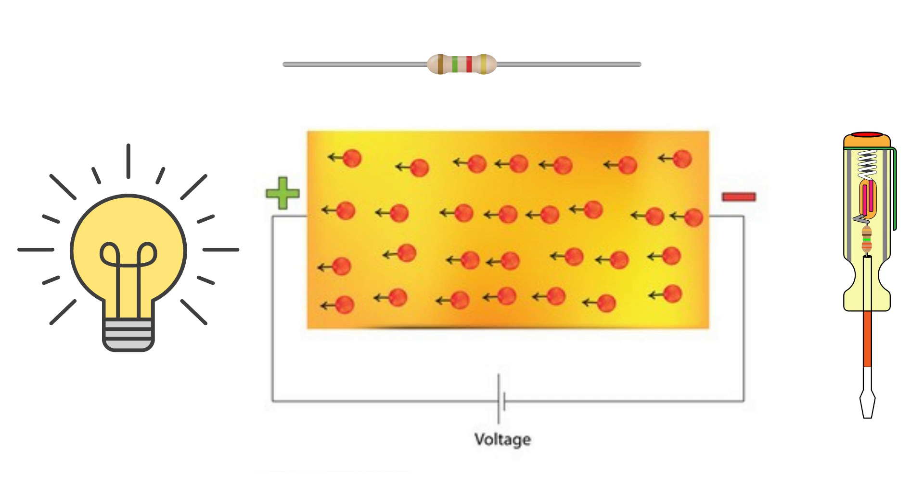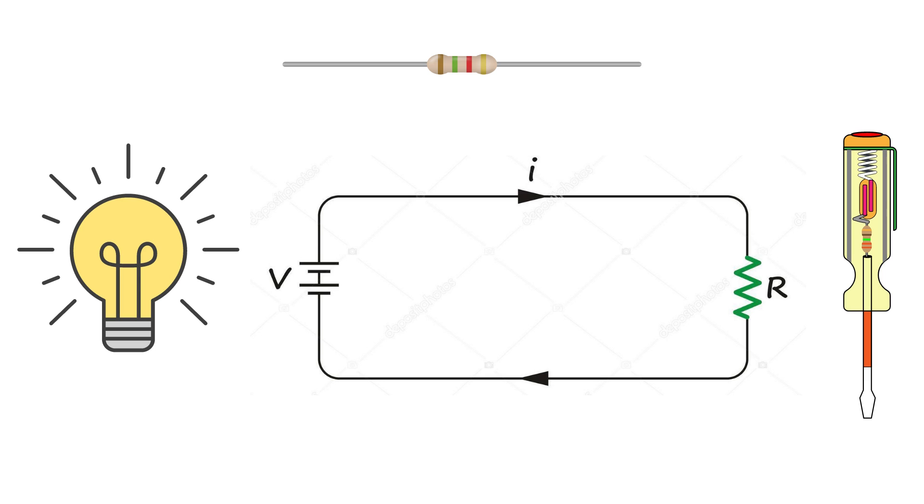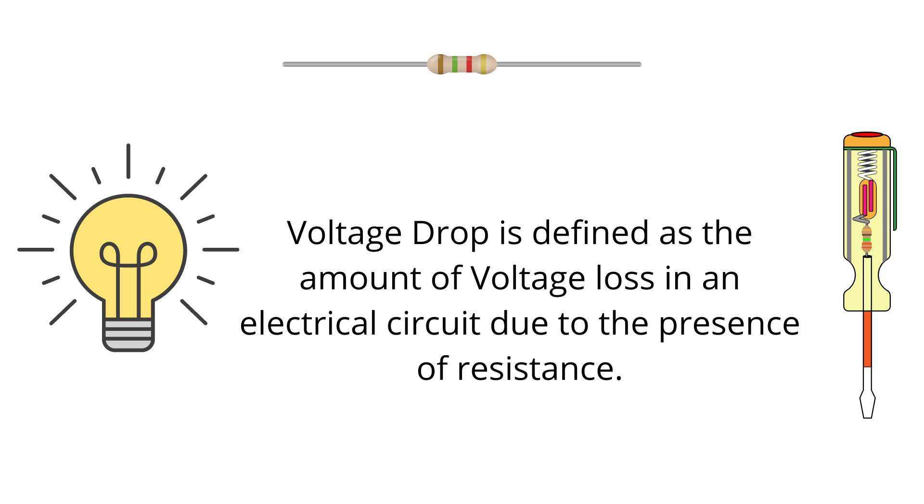Considering a simple circuit, we can establish the phenomena of voltage drop in that circuit. So we define voltage drop as the voltage loss in an electrical system due to the presence of resistance in that circuit.